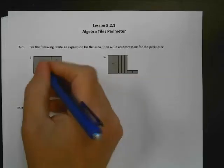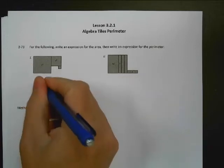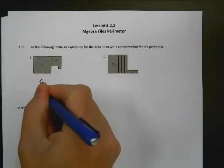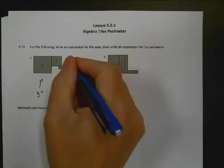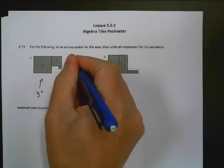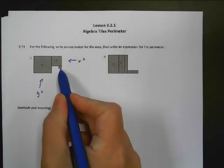So we've got different shapes here, and I don't know if you can see it, but the inside of this shape is saying y squared. That's the area of that shape. And the inside of this shape says x squared. Anytime you don't see anything in the shape like this one, that means it's a one by one.